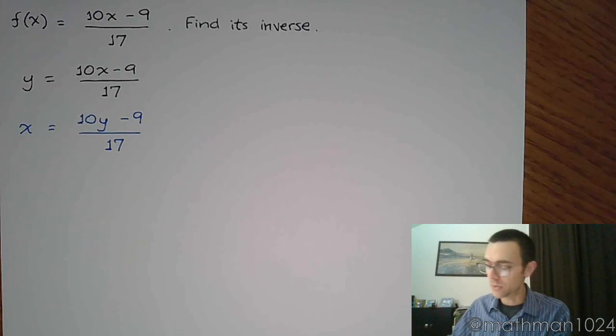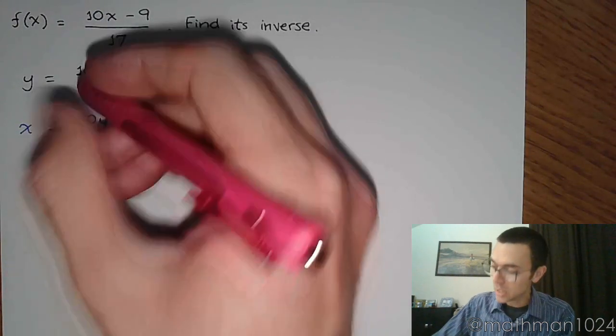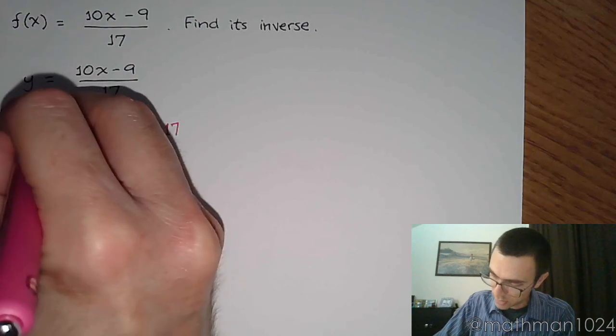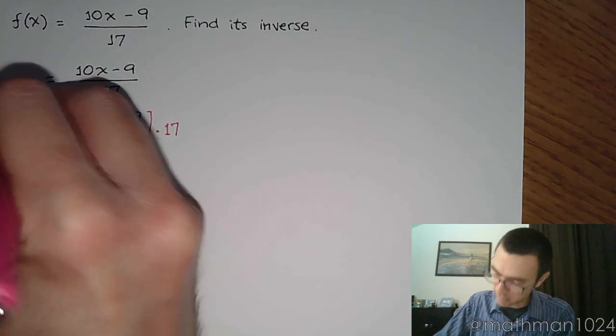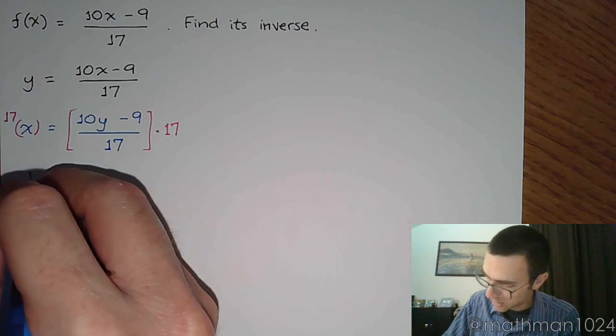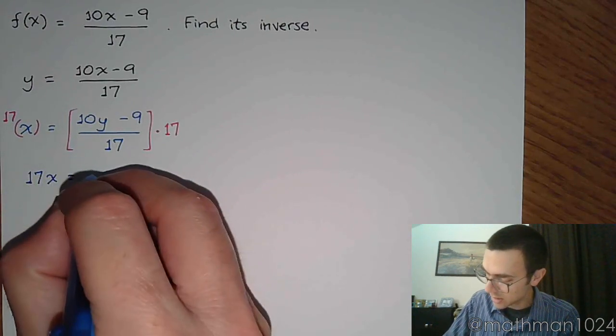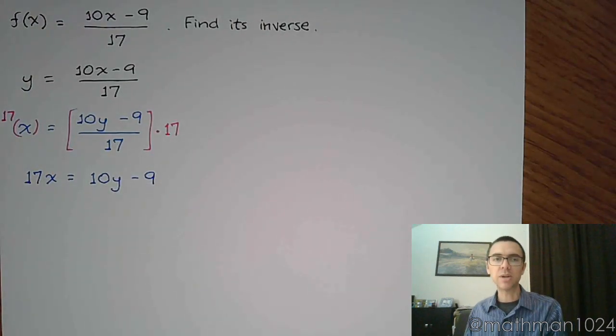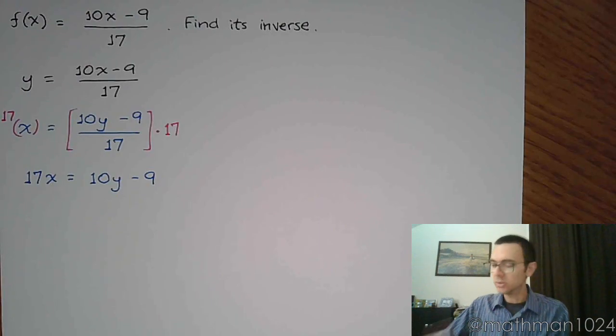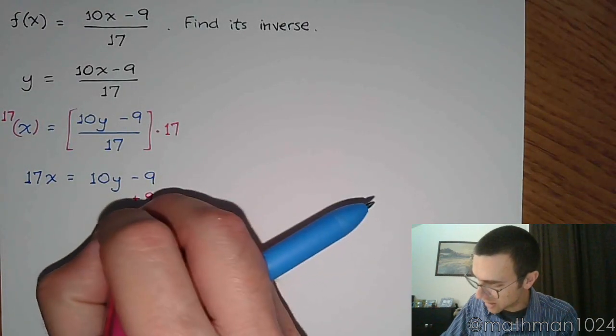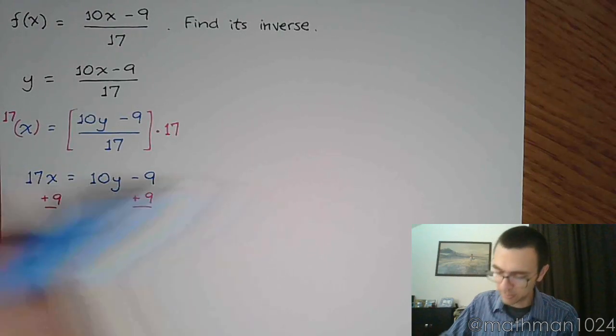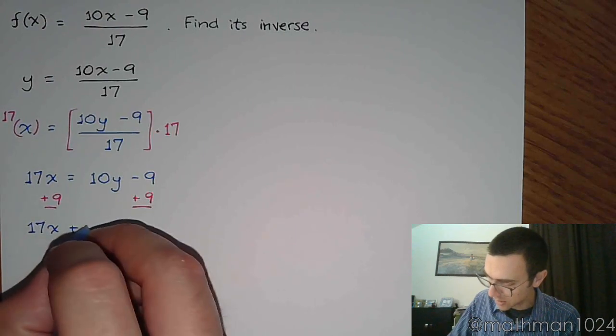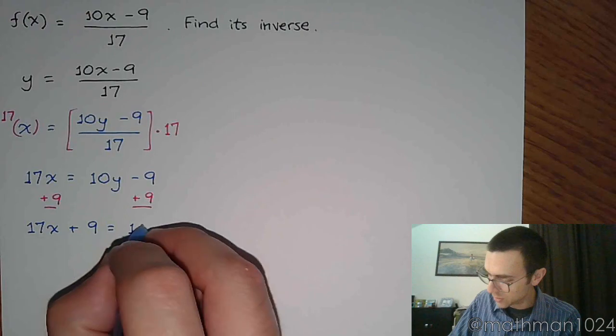All right, well the first big hurdle we have to get over is the 17. So we're going to multiply both sides of this equation times 17. So we have 17x is equal to 10y minus 9. The next thing you would do to get y by itself is add 9 on both sides.